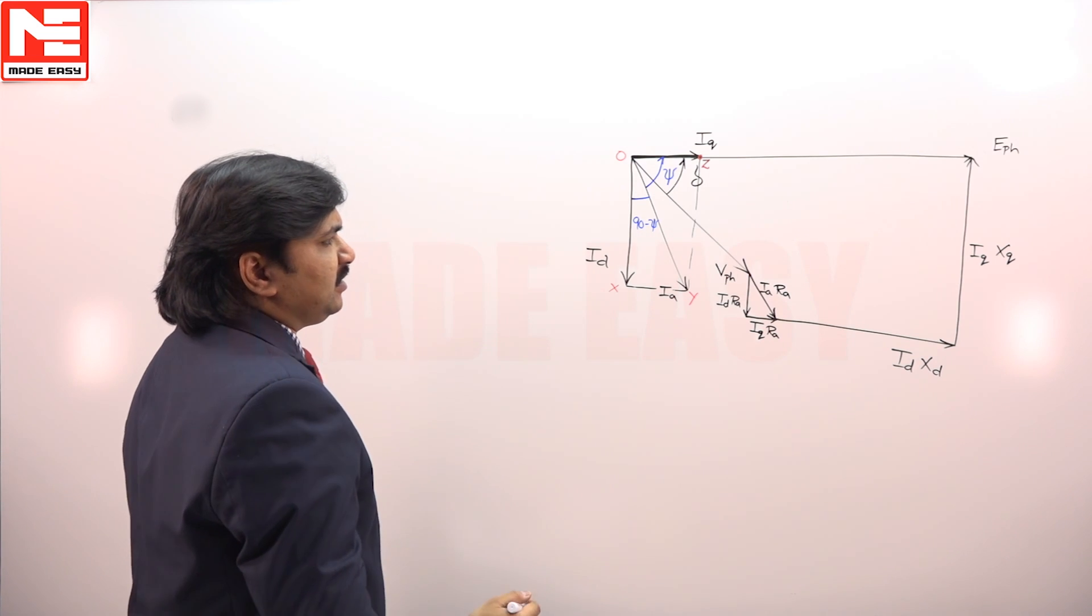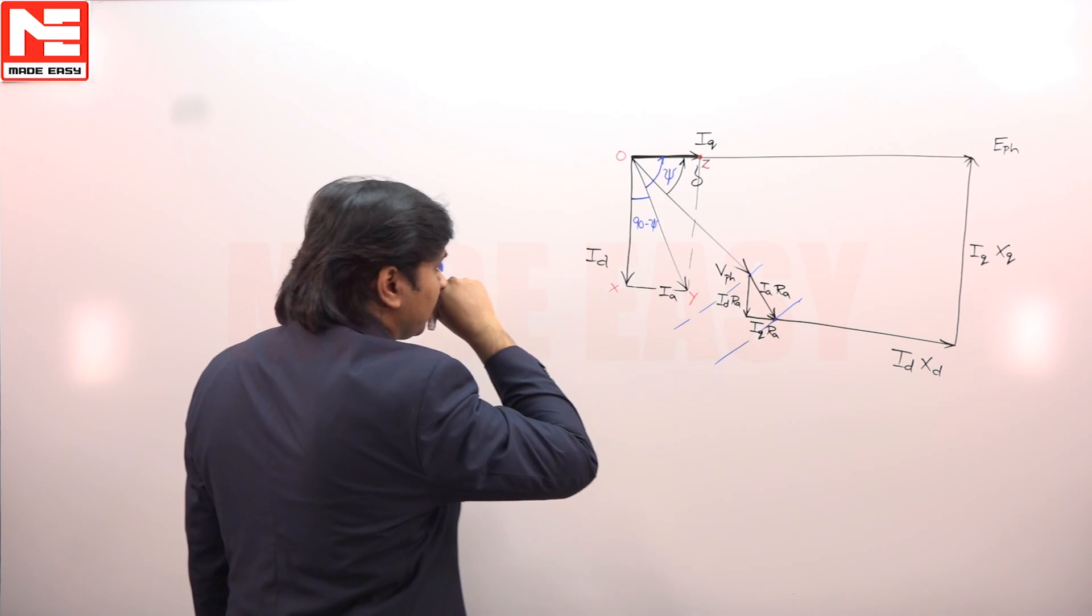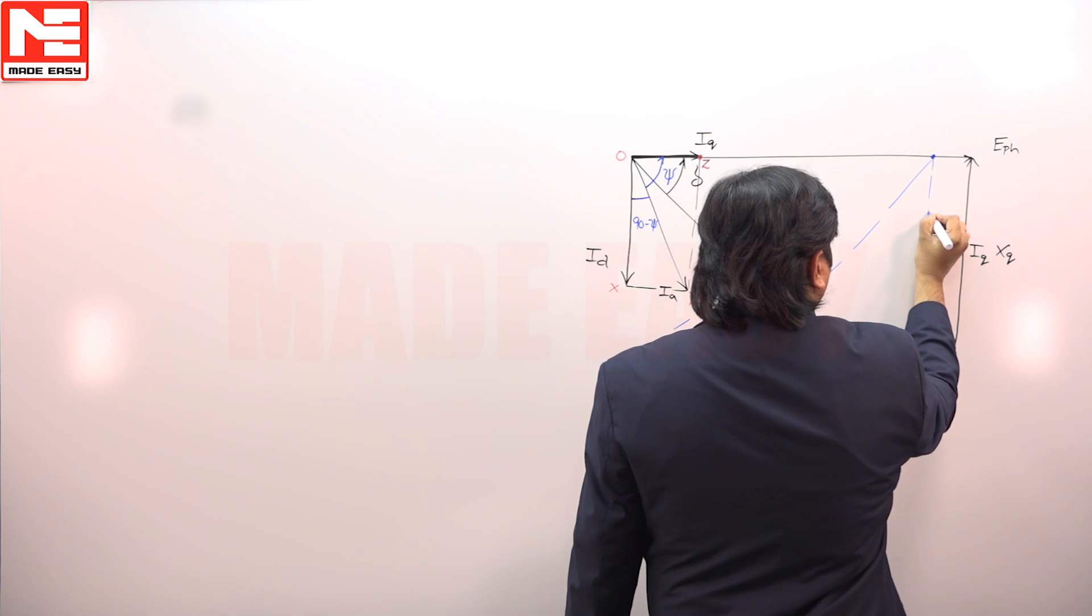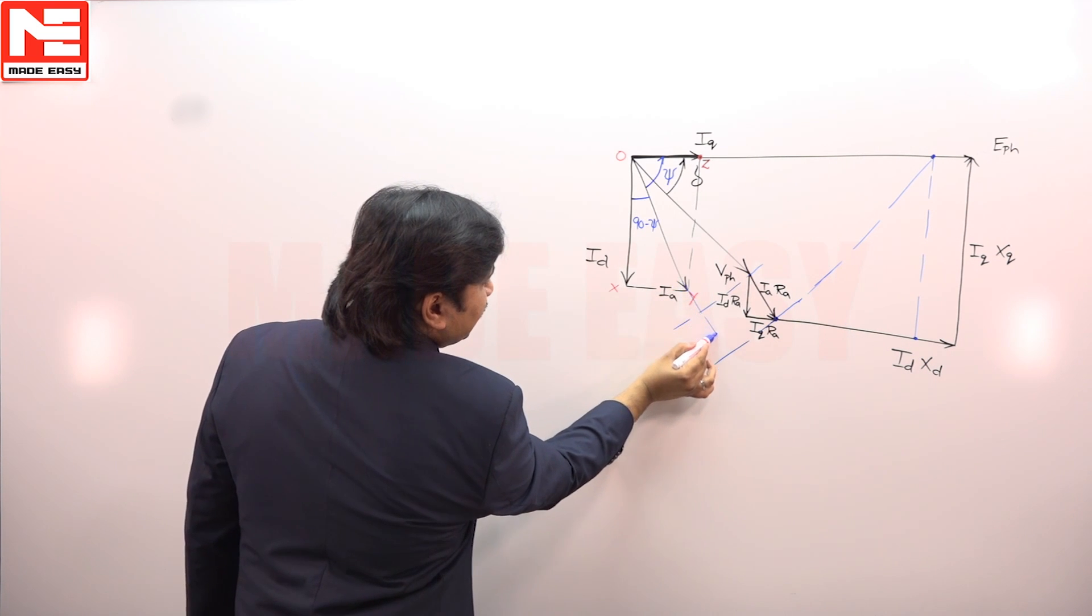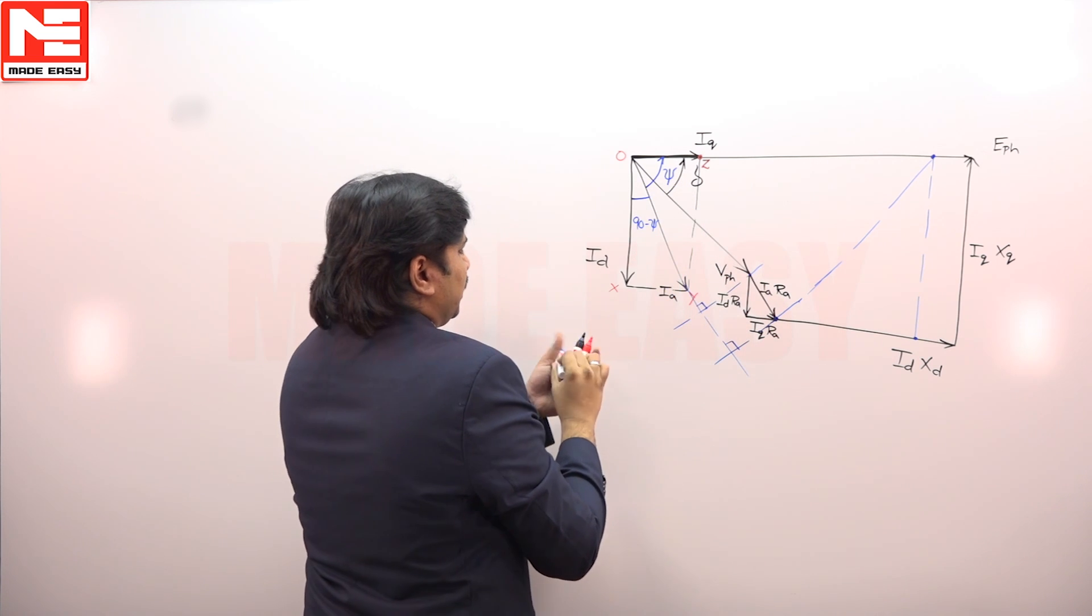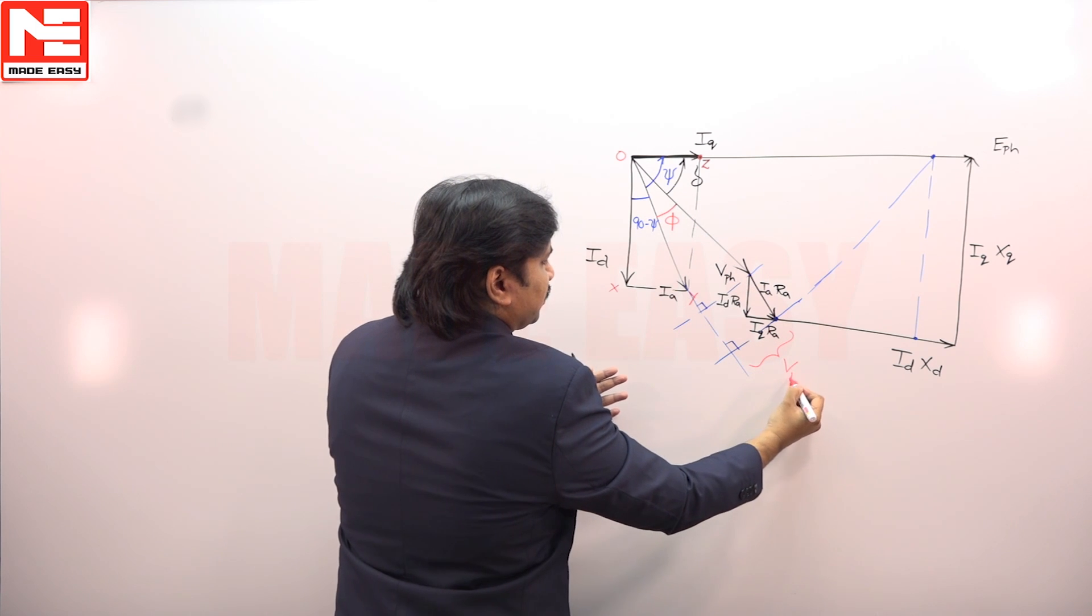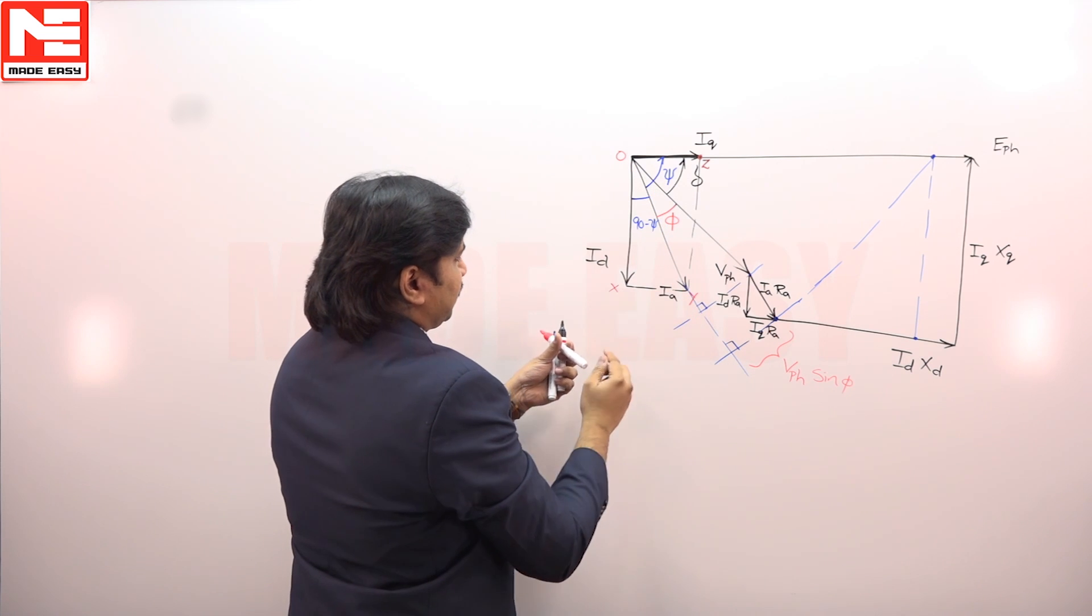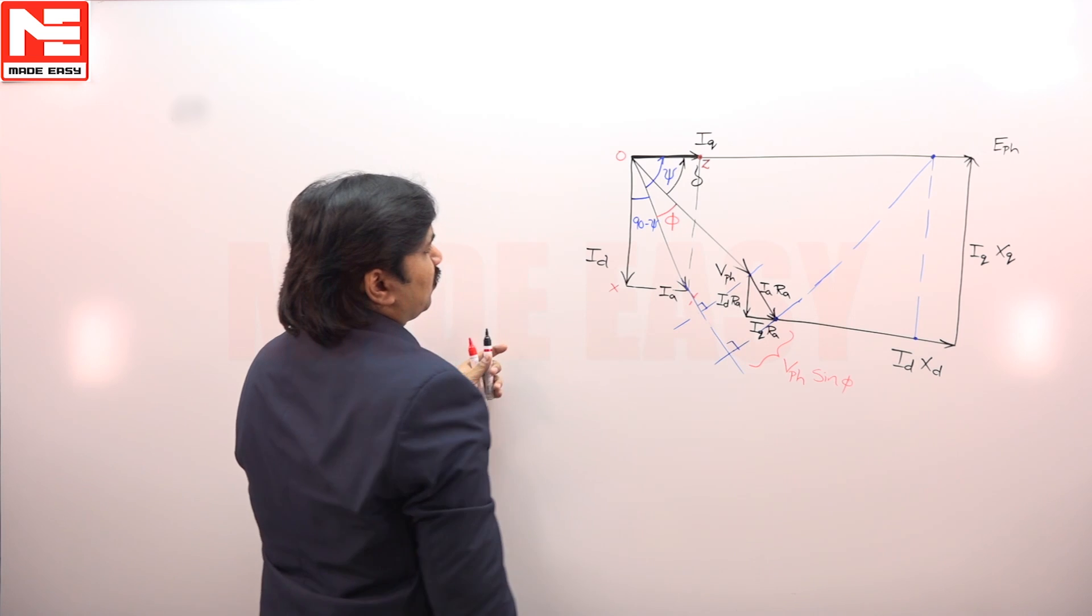We can extend this to get simple equations to calculate the unknowns. According to geometry, we are extending like this. So, this is 90, this is 90, this is 90. So, this V phase and the angle between V and IA is phi. So, this is V phase sin phi and this is V phase cos phi. Remember, this line is a parallel one like this.